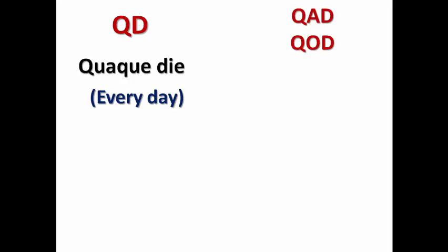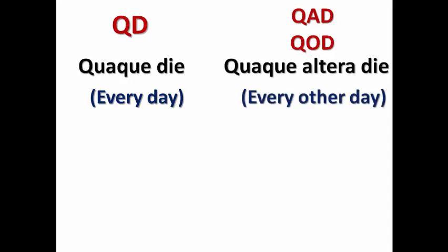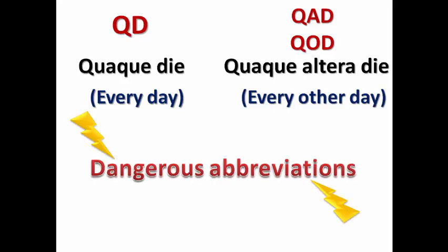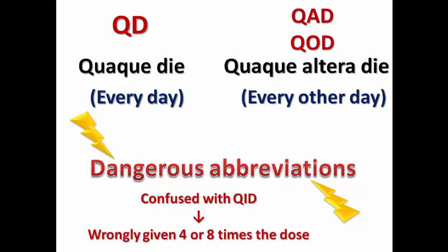Another confusing abbreviation is QAD — sometimes written as QOD — both standing for 'quaque altera die,' meaning this medication should be taken every other day. So the patient would take the medication on one day, skip the next, and then resume. The problem is these abbreviations are considered dangerous because they may be confused with QID. Not all doctors have good handwriting, so the pharmacist or nurse may read QAD as QID and give four times the actual dose instead of every other day.